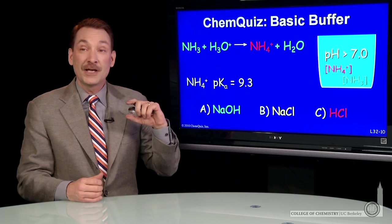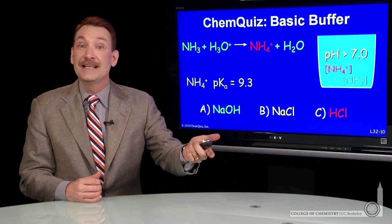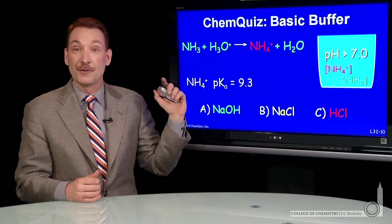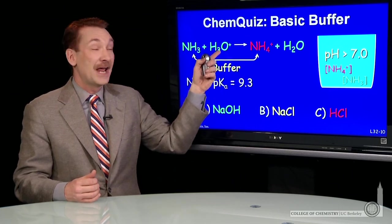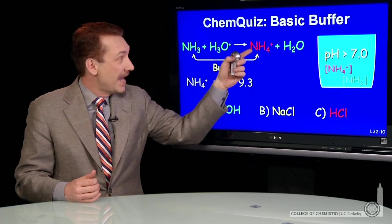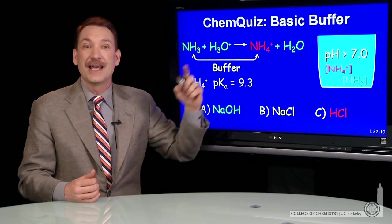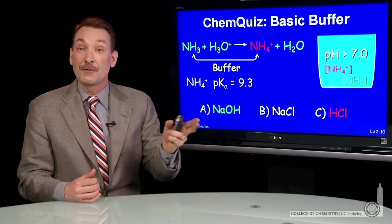If I'm talking about NH3, I need its conjugate acid. It's a base already, I need its conjugate acid. So to form its conjugate acid, I would add a strong acid and convert some of my NH3 to NH4 plus.